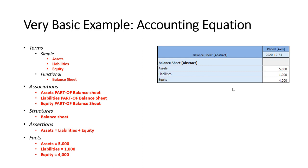Here is a very basic example: every accountant understands the accounting equation, which is itself a system. In that accounting equation you have three simple terms — assets, liabilities, and equity — and one functional term: balance sheet. You have three associations: assets are part of the balance sheet, liabilities are part of the balance sheet, and equity is part of the balance sheet. The functional term balance sheet defines the one structure. You have one assertion: assets equals liabilities plus equity. And you have three facts: assets of 5,000, liabilities of 1,000, and equity of 4,000. This makes up the logical system.